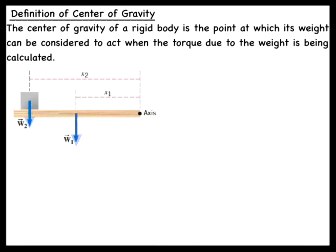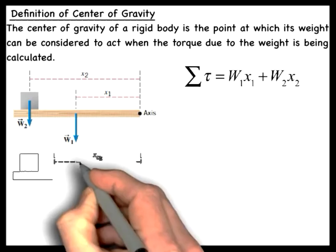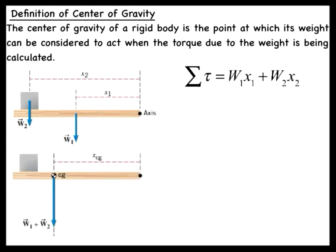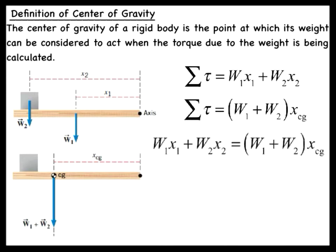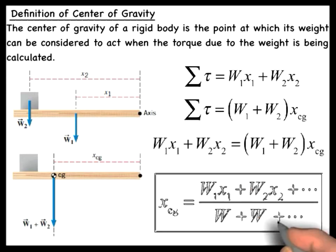Each one of these weights will produce a counterclockwise torque about the axis of rotation. Thus, the net torque on the plank will be equal to w1x1 plus w2x2. However, it is possible to calculate the net torque by treating the total weight of the system, w1 plus w2, as if it were located at the system's center of gravity with a lever arm equal to x sub cg. These two expressions for the net torque must be the same. We can solve this expression for x sub cg, which locates the center of gravity of the system.